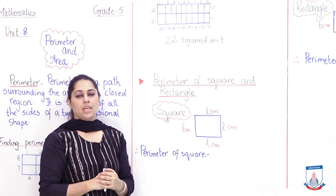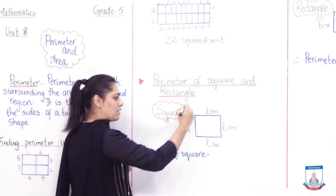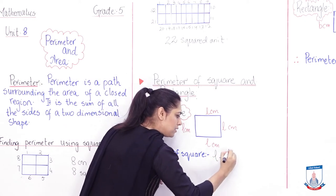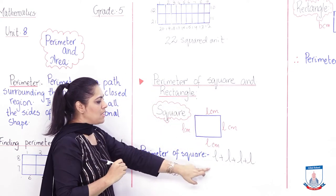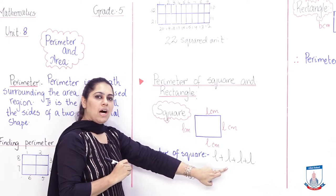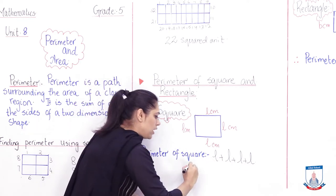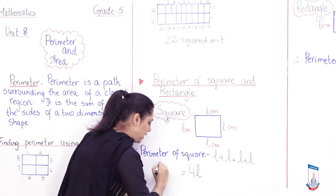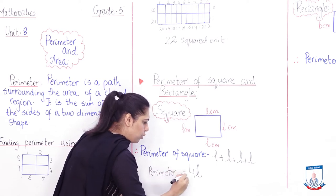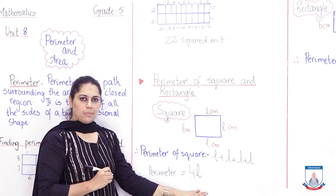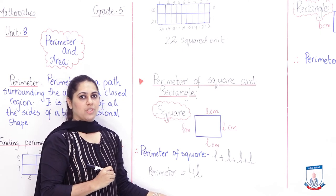What is perimeter's definition? Yes, very good. Adding all its sides. So let's add all its sides. Length plus length plus length plus length. How many times do you see L? 1, 2, 3, 4. It's 4L. So perimeter of square is 4L. I hope you understand this.